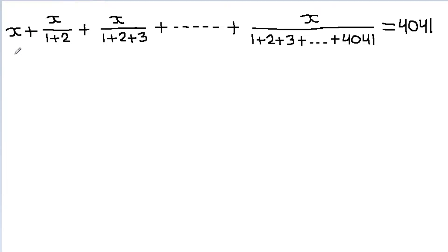In this video, we are given that x plus x by (1 plus 2) plus x by (1 plus 2 plus 3) plus dot dot dot plus x by (1 plus 2 plus 3 plus up to 4041) is equal to 4041, and we have to find the value of x.